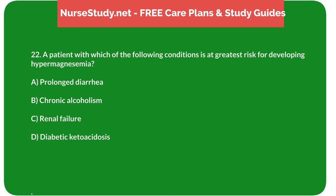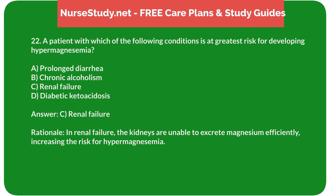Question 22: A patient with which of the following conditions is at greatest risk for developing hypermagnesemia? A. Prolonged diarrhea. B. Chronic alcoholism. C. Renal failure. D. Diabetic ketoacidosis. Answer: C. Renal failure. Rationale: In renal failure, the kidneys are unable to excrete magnesium efficiently, increasing the risk for hypermagnesemia.